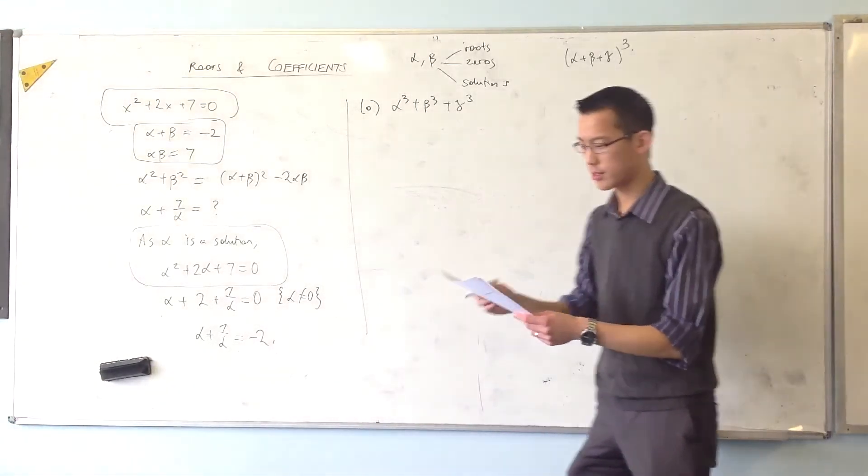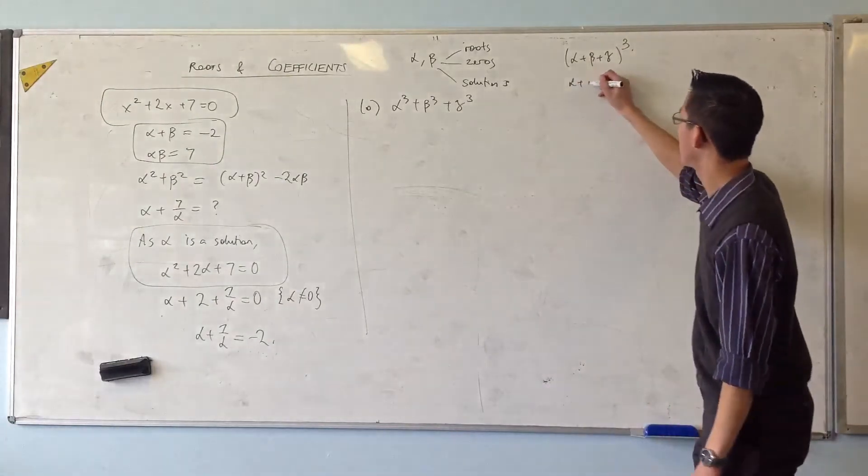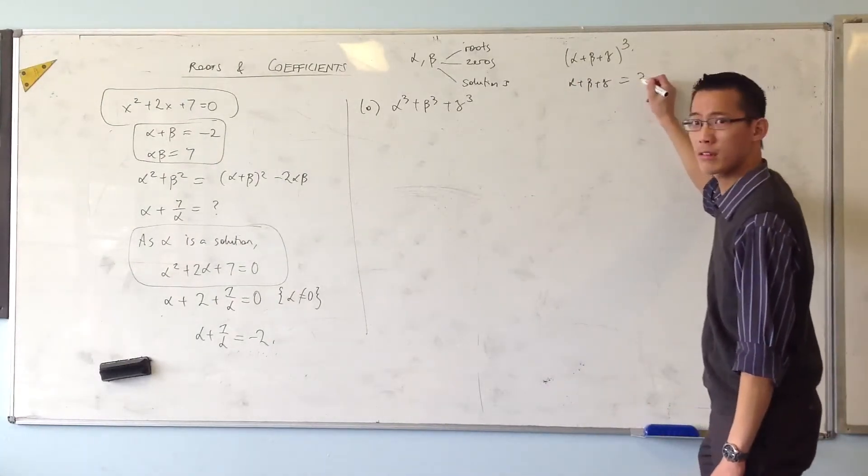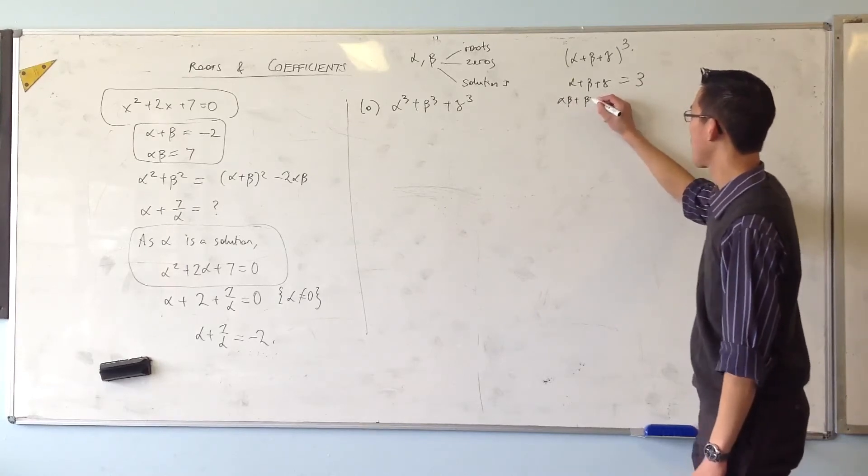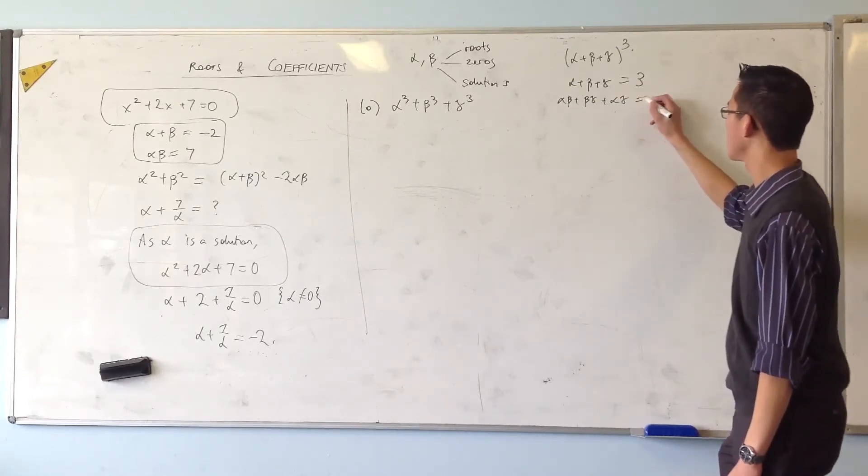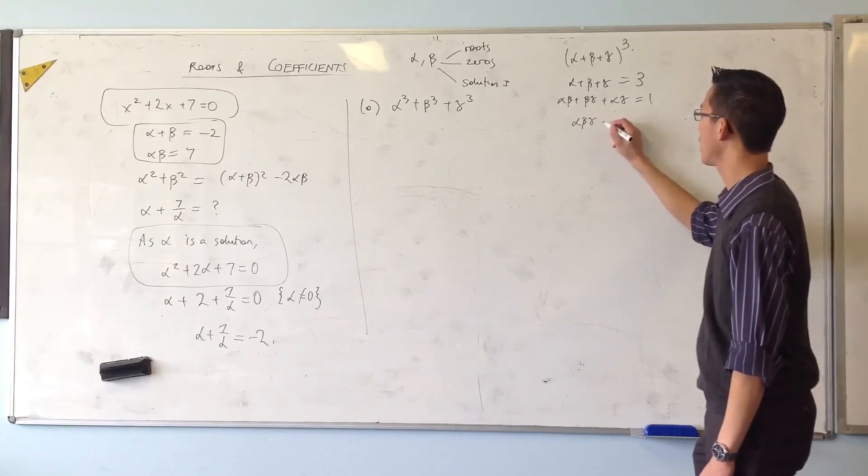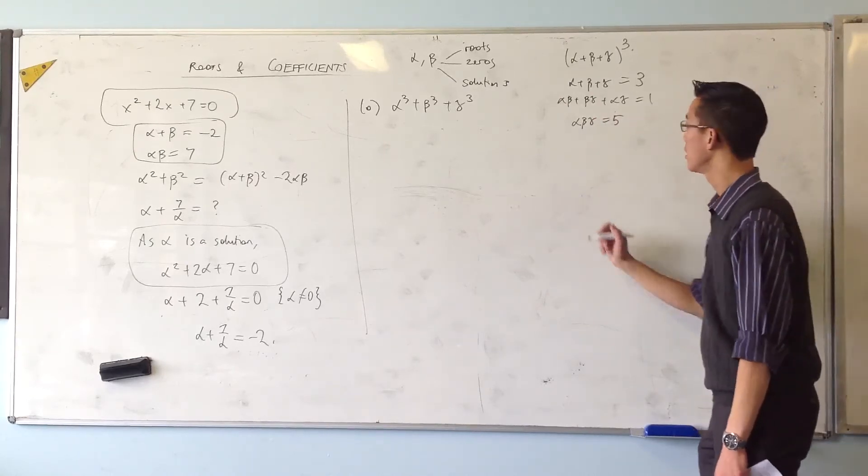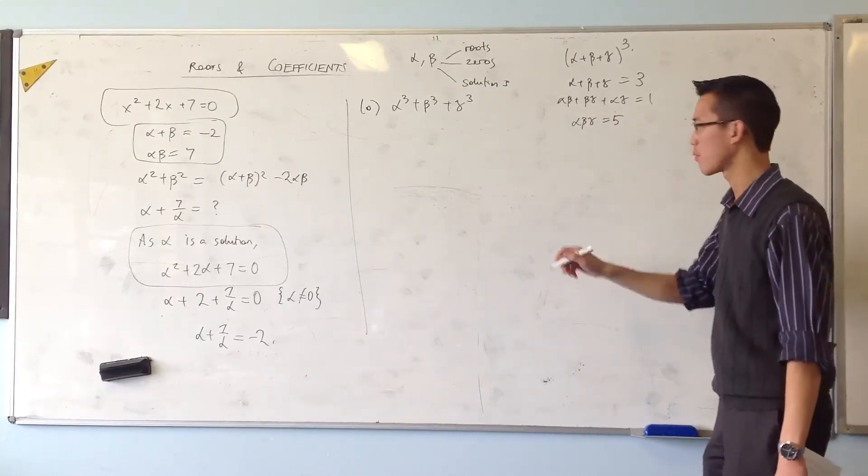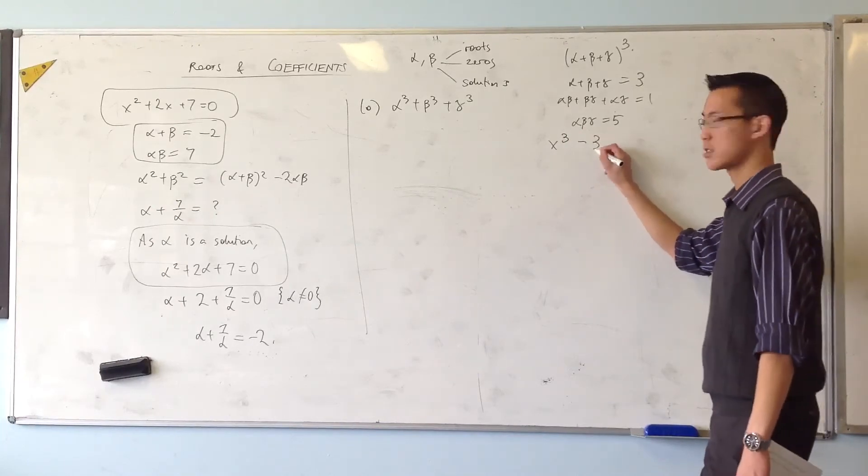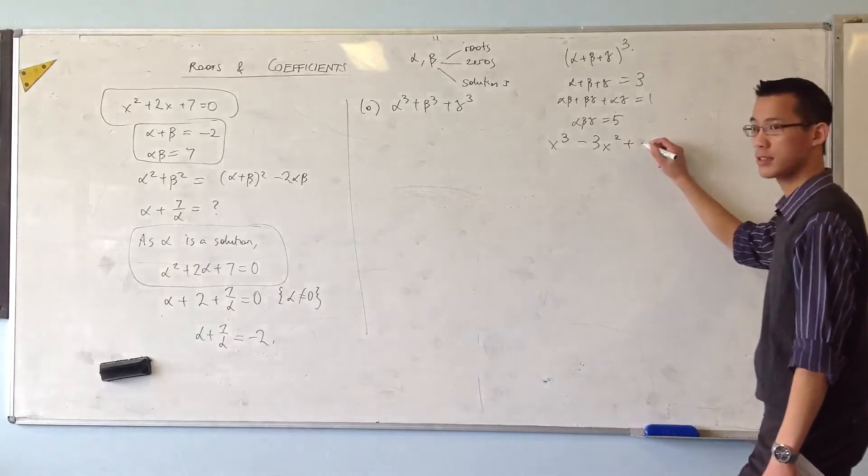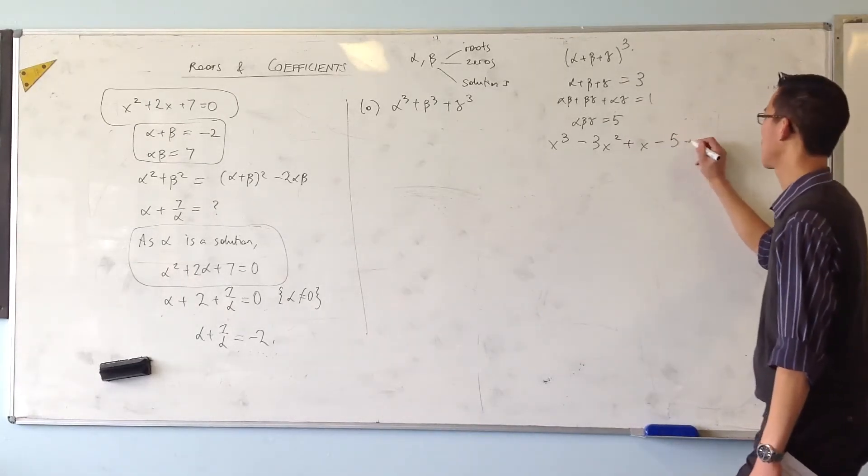Now I think we've already got all these pieces of information. Alpha plus beta plus gamma, I think it was like three. Yeah, three. Alpha beta, beta gamma, and alpha gamma is one. And I think the product is five. Is that right? Yeah. And the original equation that we got them from was what? X cubed, minus three x squared plus x minus five. Good.